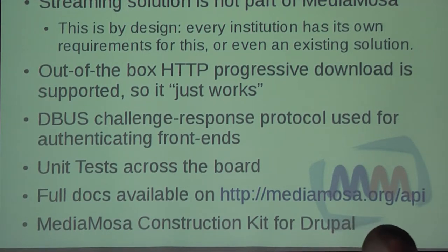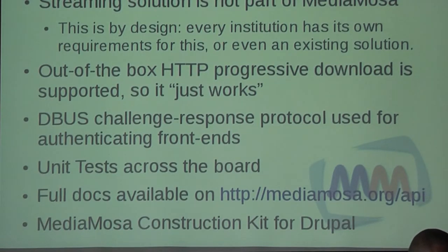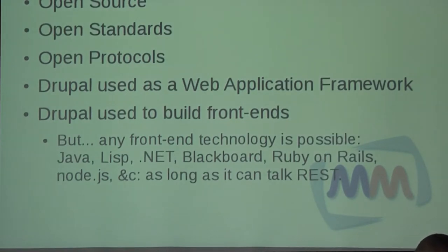The unit test result screen — the famous red-green screen — is now used as a status monitor for the system. We can just continually run these unit tests and they will immediately tell you if something goes wrong and pinpoint exactly where it is. Of course, we have a community online. You can find full documentation on MediaMosa.org.